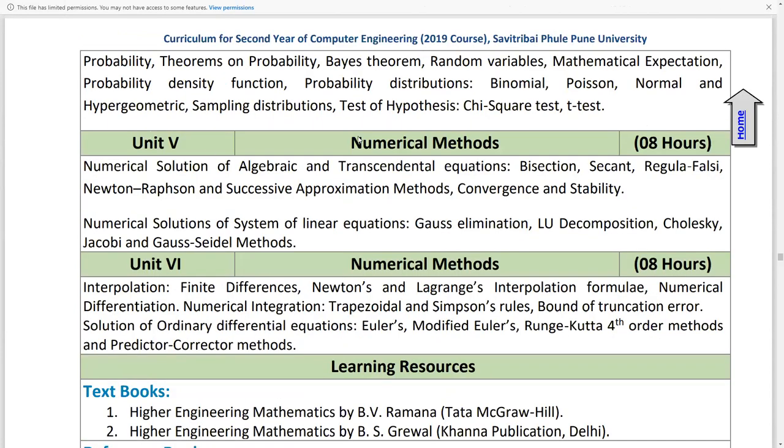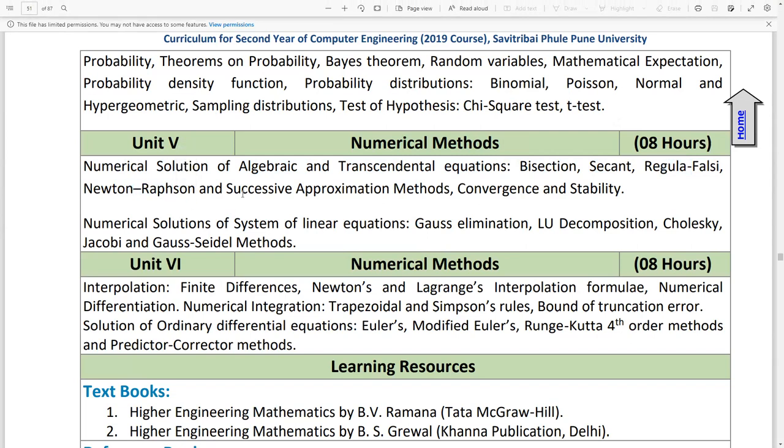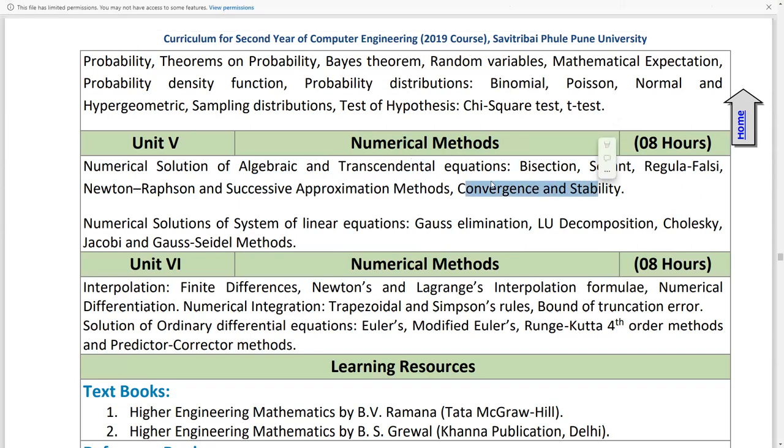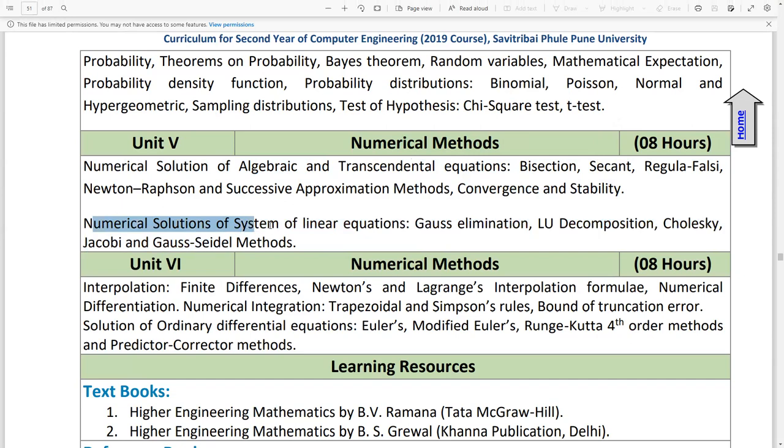Unit 5 is Numerical Methods. This includes numerical solution of algebraic and transcendental equations: bisection, secant, regular falsi, Newton-Raphson method, successive approximation method, convergence and stability. Also numerical solution of system of linear equations: Gauss elimination, LU decomposition, Cholesky, Jacobi, and Gauss-Seidel methods.